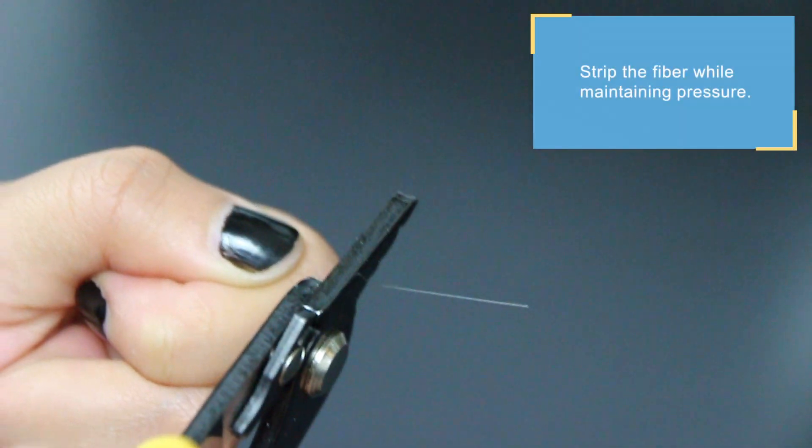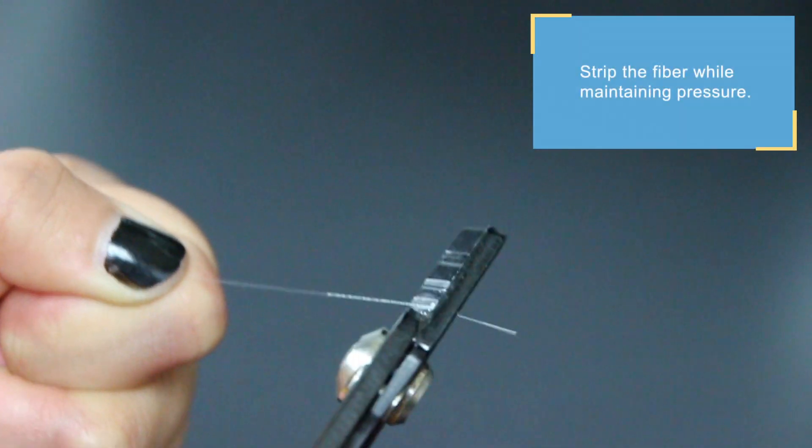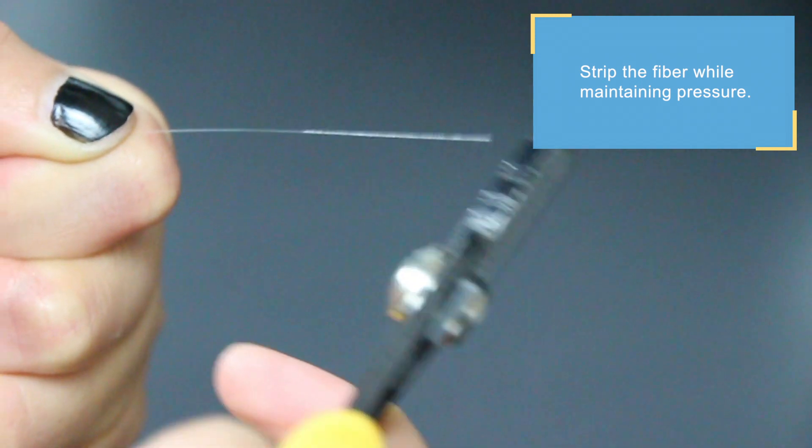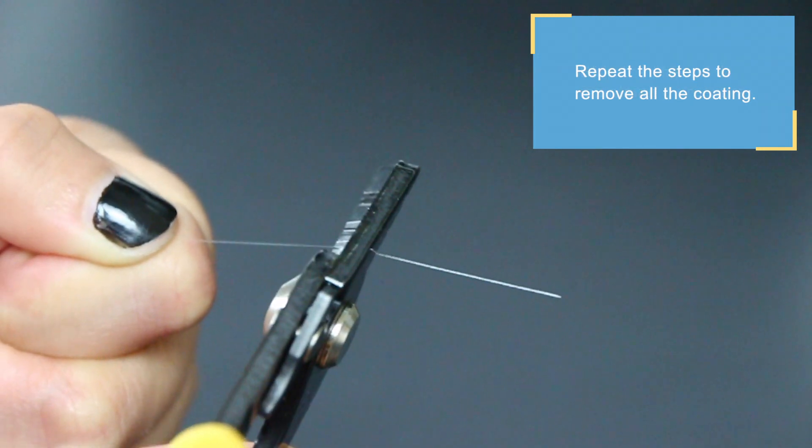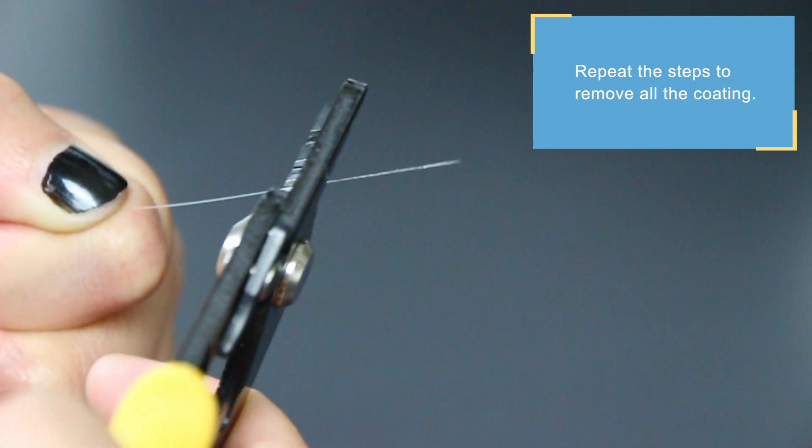Move forward to scratch the surface of the coating. Continue to hold firmly while stripping the coating. Sometimes you might need to repeat these steps until the coating is completely removed.